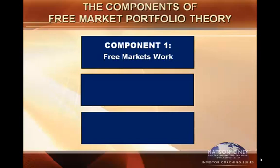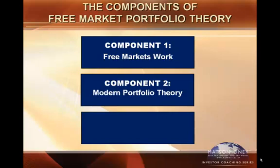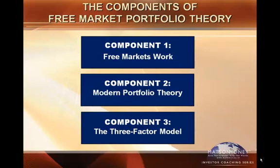Component number one is free markets work. Component number two is modern portfolio theory. And component number three is the three factor model. Don't worry about the complicated language because we're going to break each of these down and simplify them as we go forward.